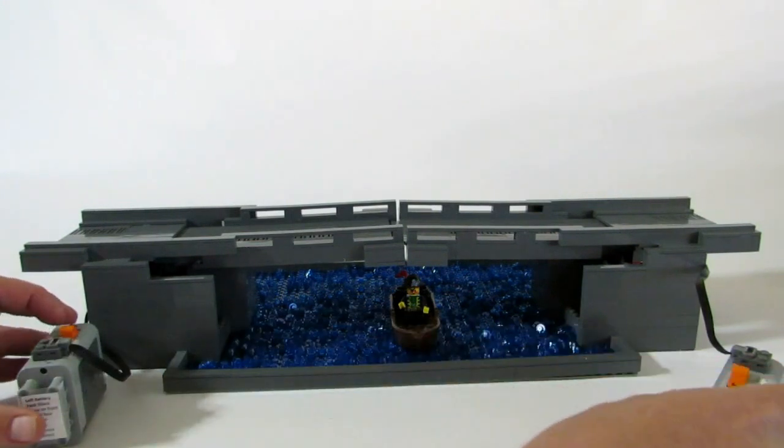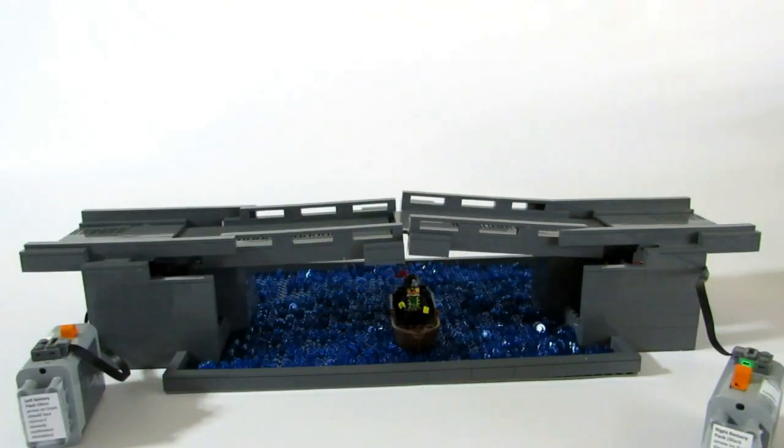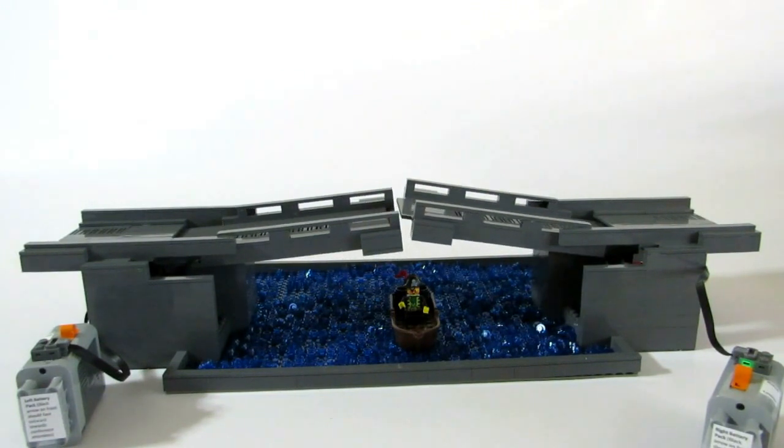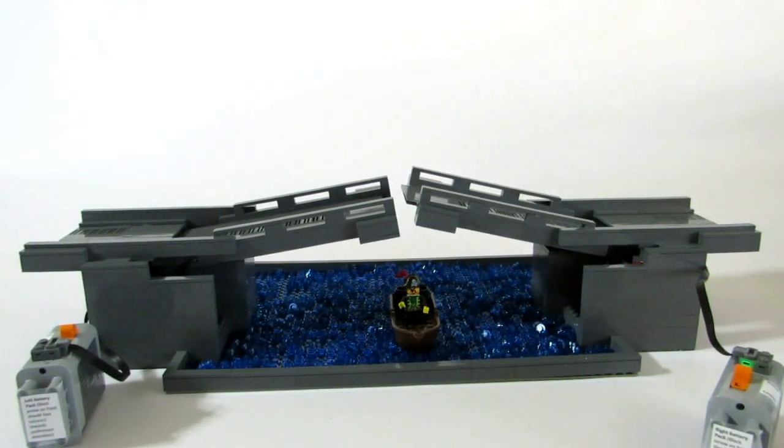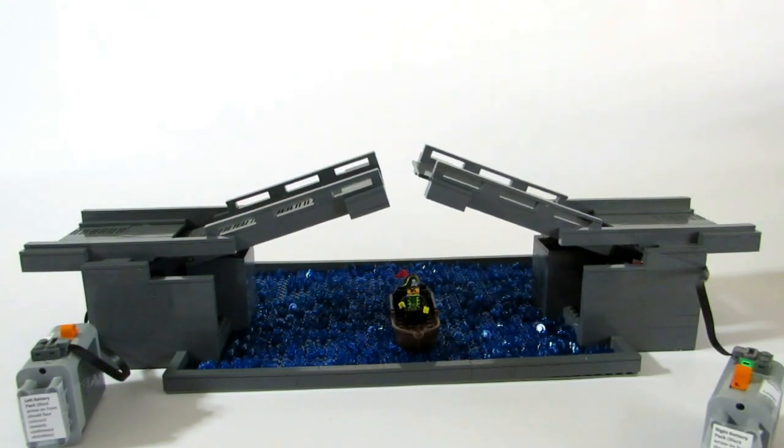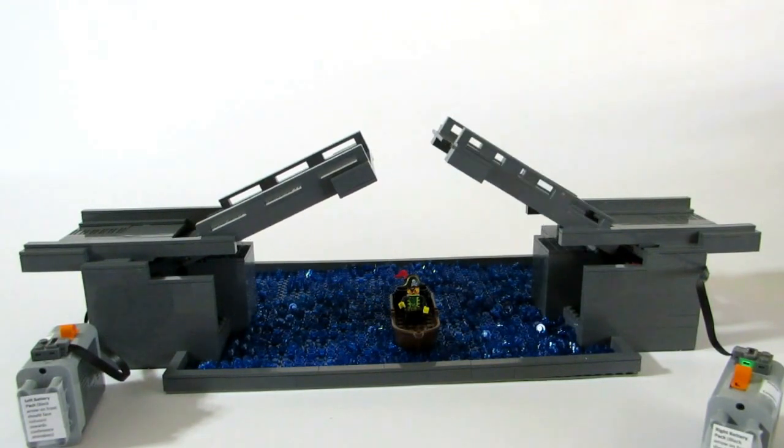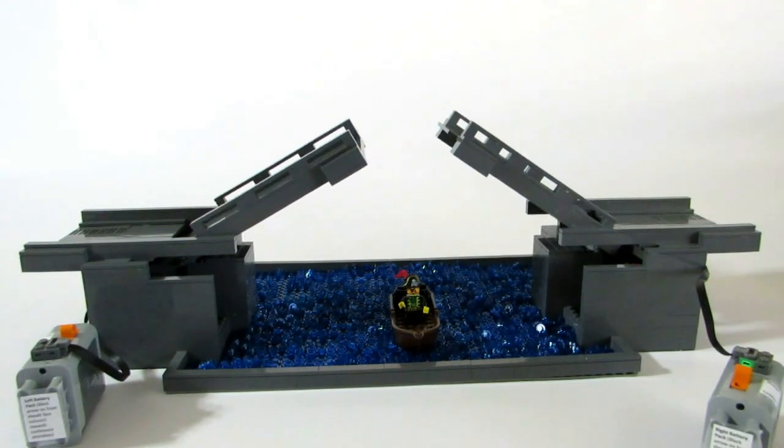The way this works is we're going to push these engines forward, and as you can see, the bridge will raise using the engine. What we did is we had to gear down the engine, so if you hook the engines directly to the gears that raise and lower the bridge, it moves too fast. We had to use multiple sets of gears to slow that down.